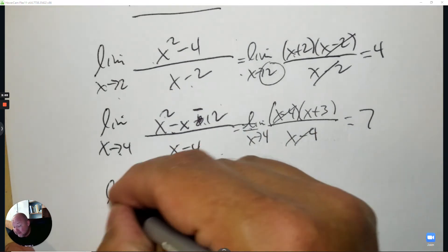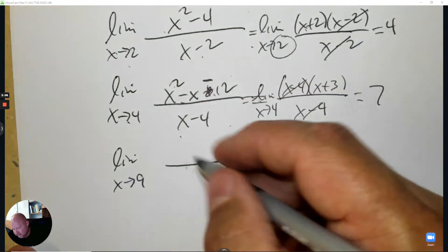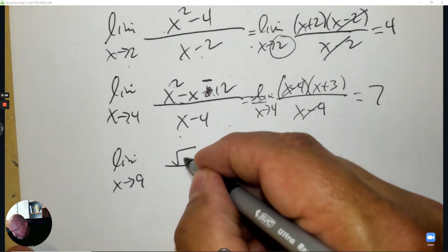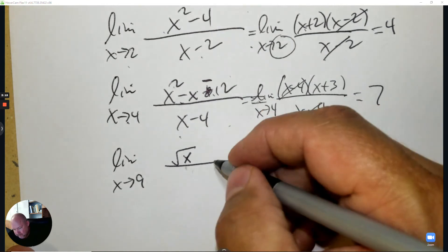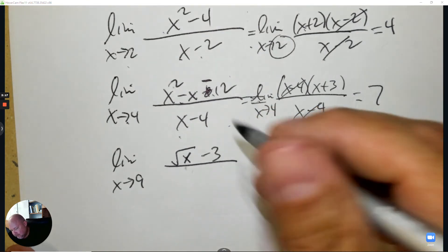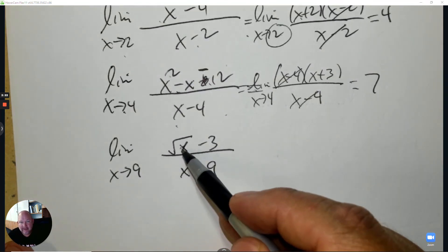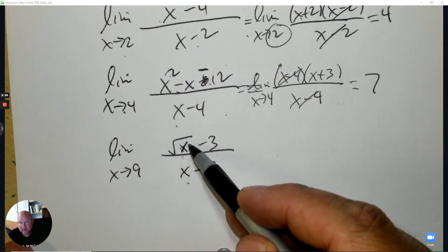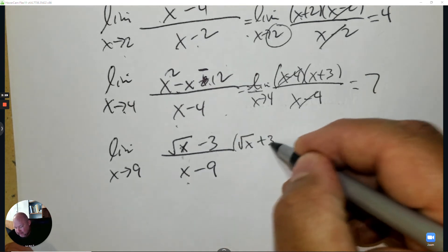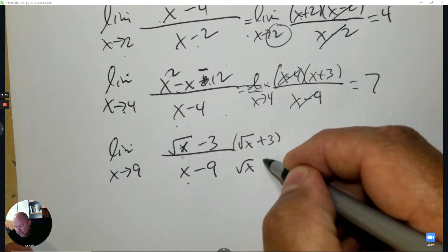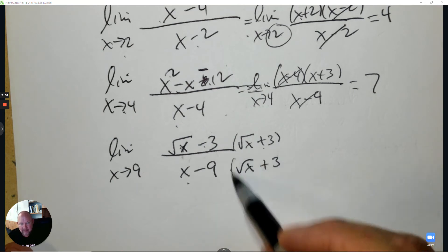Sometimes there's a square root involved. If I plug in 9 and 9, you get 0 over 0, indeterminate. This requires what's called a conjugate. You change the connecting sign for the radical part, so instead of subtracting, it's adding top and bottom.